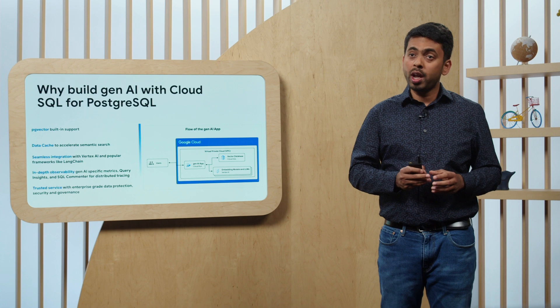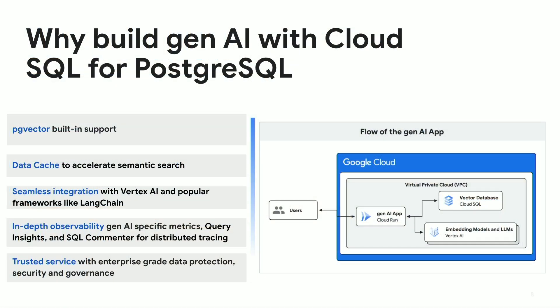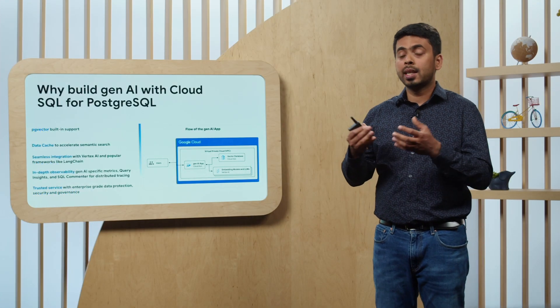Now we will go into how Cloud SQL for PostgreSQL is an ideal choice for building a Generative AI application. Cloud SQL for PostgreSQL offers a number of benefits: it supports PGVector, which means you can use the same familiar database as a vector database. Cloud SQL also supports data cache, a server-side SSD that helps improve read performance for semantic searches. Additionally, Cloud SQL for PostgreSQL is integrated with Vertex AI and ecosystem tools such as LangChain, making it easier to orchestrate and build Generative AI applications.